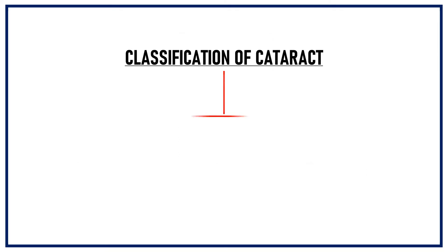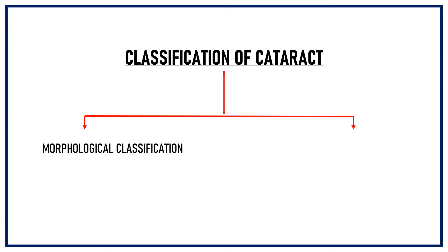There are two ways by which we can classify cataract. First is the morphological classification. Morphology means the shape or the structure of an object, so morphological classification of cataract is based on the different structural features of cataract.